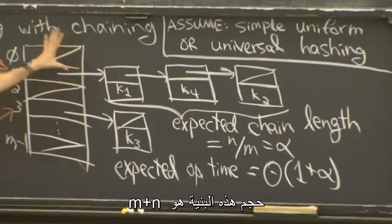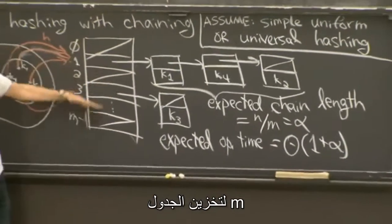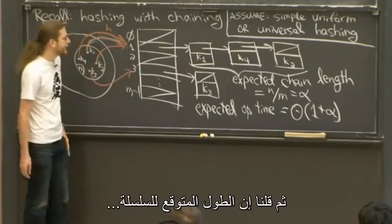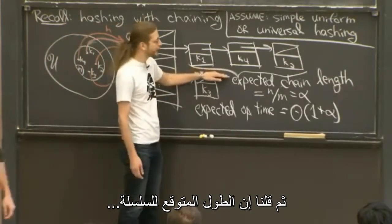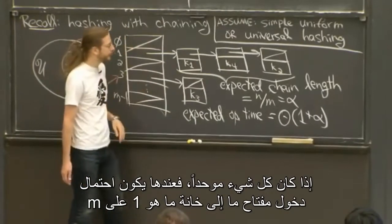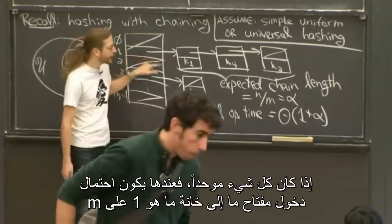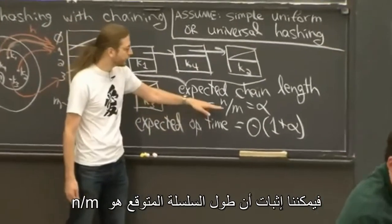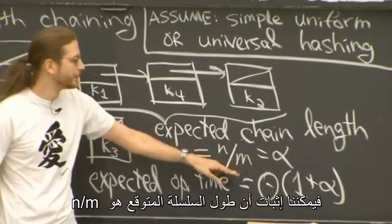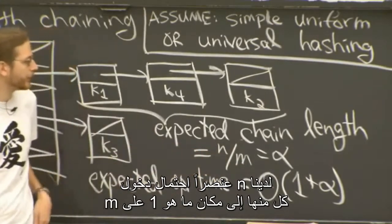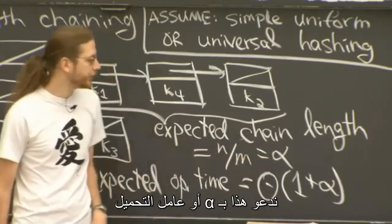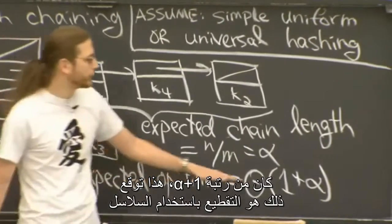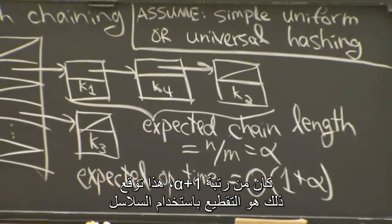The total size of this structure is n plus m: m to store the table, and n for the sum of the lengths of all the lists. The expected chain length, if everything's uniform, is 1/m probability of a particular key going to a particular slot. The total expected chain length is n over m. We call that alpha, the load factor. The operation time for insert, delete, or search is O(1 + alpha). So that's in expectation.